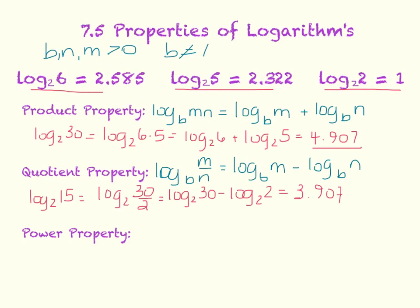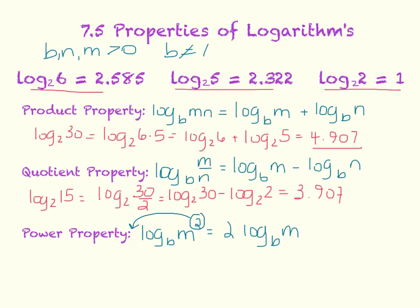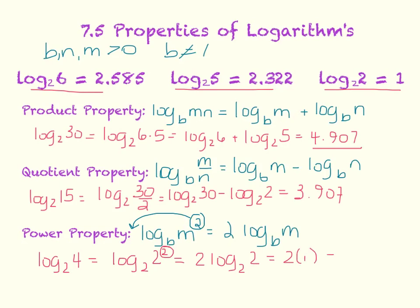The last property is the power property: log base b of m squared is the same as 2 times log base b of m. All you're doing is pulling the exponent out to the front of the log. For example, log base 2 of 4 can be rewritten as log base 2 of 2 squared. Bringing the exponent 2 out front: 2 times log base 2 of 2. Since log base 2 of 2 is 1, that gives me 2 times 1 equals 2.